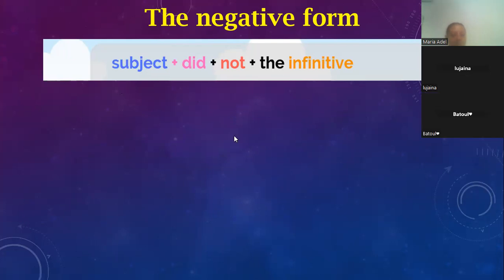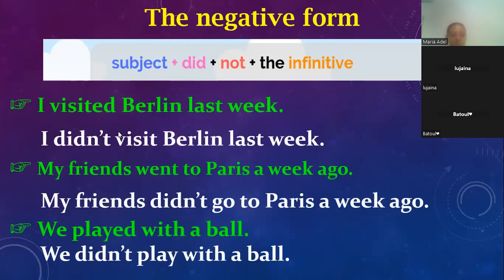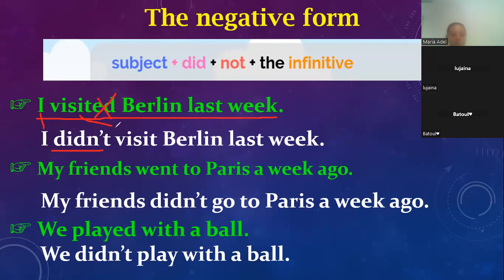Let's see the examples. Here: 'I visited Berlin last week.' If I want to make it negative, the subject I, then didn't — didn't takes away the ED so the verb returns to the infinitive form: 'I didn't visit Berlin last week.'